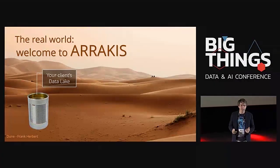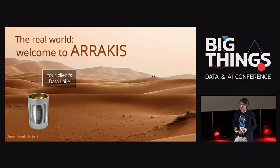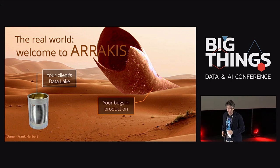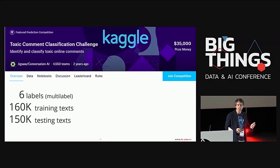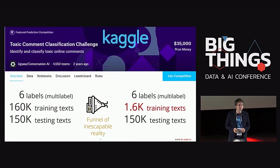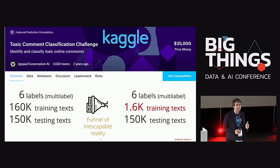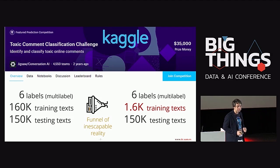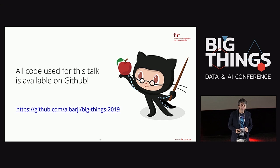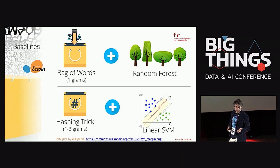Instead of working with the full Kaggle dataset, we apply a real-world filter and now only have 1,600 training data points — a more reasonable dataset for an industry problem. I'll still keep the full test data to show that the methods generalize well, but I'll only use it to measure accuracy. All the code used in this talk is publicly available on GitHub.